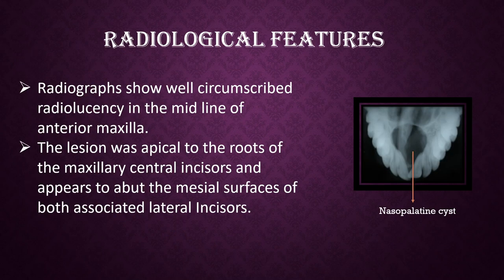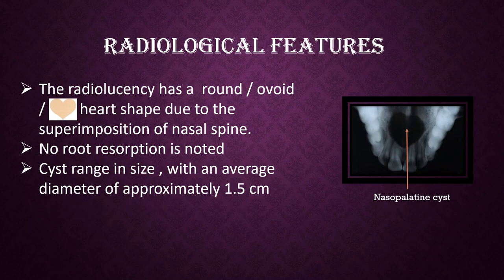Radiological features: radiographs show a well-circumscribed radiolucency in the midline of the anterior maxilla. The lesion is apical to the roots of the maxillary central incisors and appears to abut the mesial surfaces of both associated lateral incisors. The radiolucency has a round, ovoid, or heart shape due to the superimposition of the nasal spine. No root resorption is noted. Cysts range in size with an average diameter of approximately 1.5 cm.